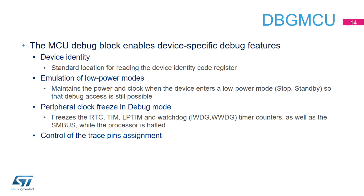This code is accessible by the SWJDP or by the user software. Low power mode emulation means that the debugger connection is not lost when entering a low power mode. It eliminates the need to replace the low power entry command, for example WFI or WFE, by a while loop. On exit, the device is in the same state as if the emulation was not active, apart from any changes made by the debugger during the low power mode emulation.